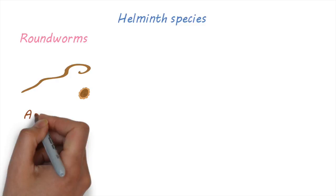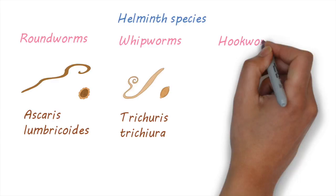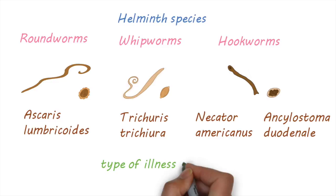These are roundworms, Ascaris lumbricoides; whipworms, Trichuris trichiura; and hookworms, Necator americanus and Ancylostoma duodenale. They vary in the type of illness they cause and their life cycle.